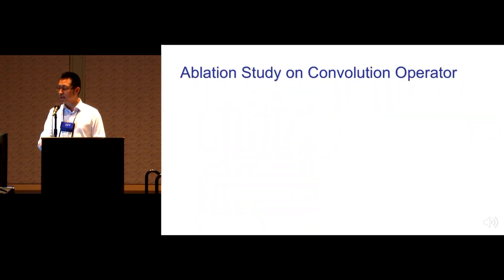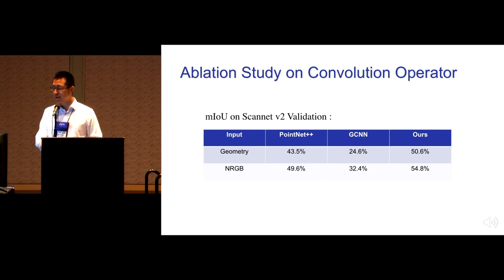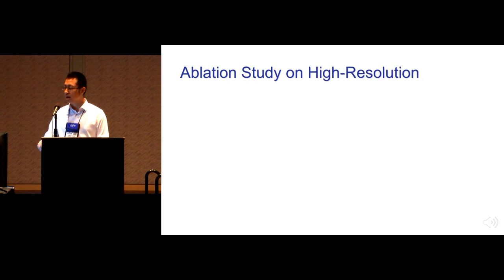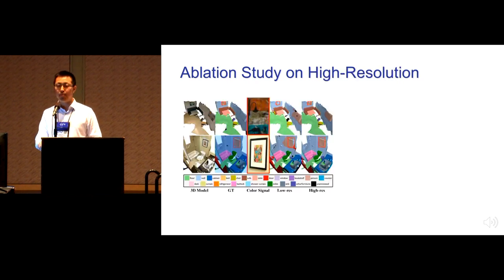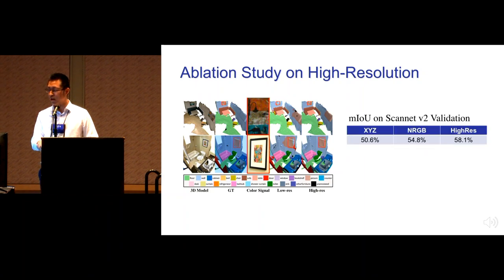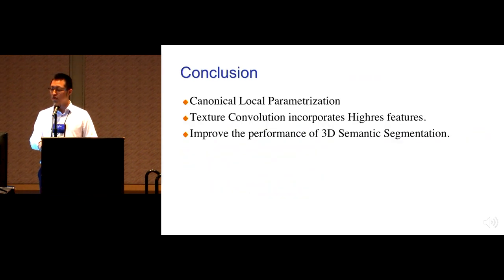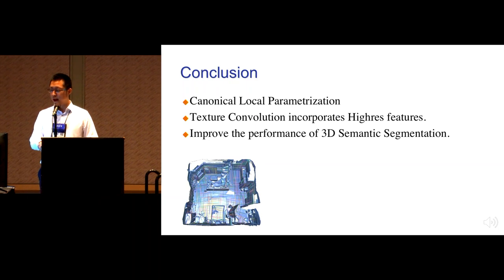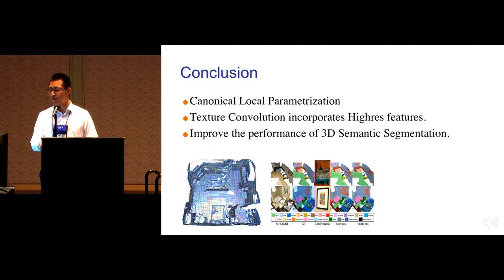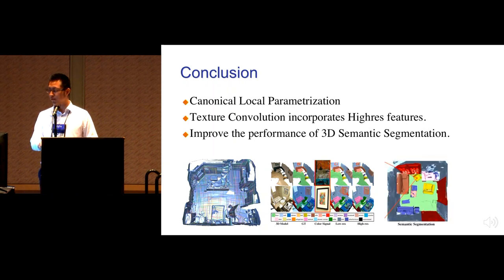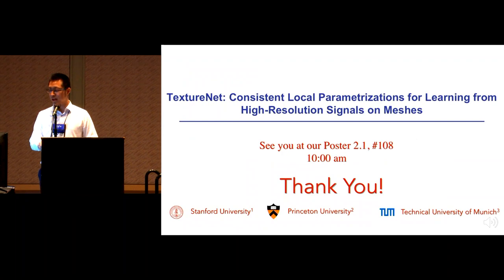We also conduct ablation studies on convolution operators including PointNet++ and GCNN, and our method performs better. We can handle high resolutions up to 4mm, utilizing high-resolution features to further improve performance — for example, photo frames can be identified with high resolution. In conclusion, we propose canonical local parameterization and apply texture convolutions incorporating high-resolution features, improving segmentation performance. Our code is publicly available.